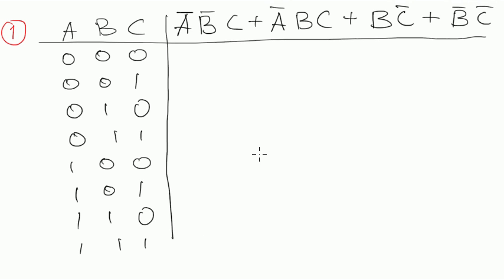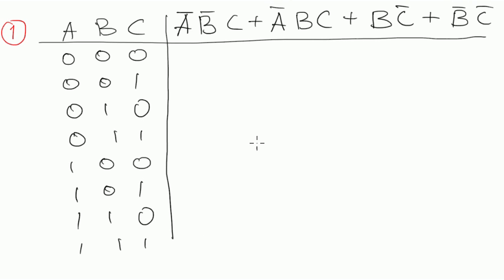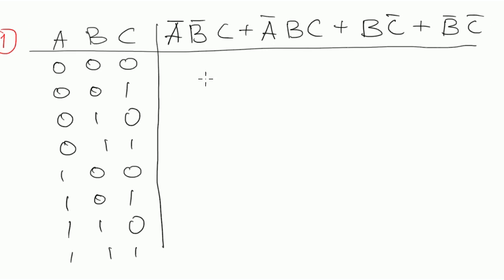Now let's create a truth table. For all zeros, this term will be 0 because we have C is 0. This term is 0, C is 0, B is 0, this term is 0. But B negated C negated, they will be ones after negation. So the result will be 1.